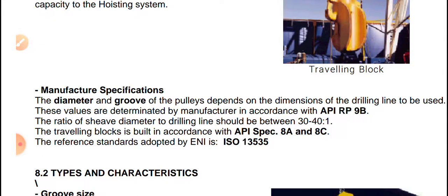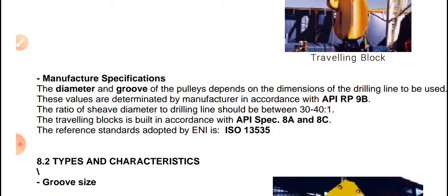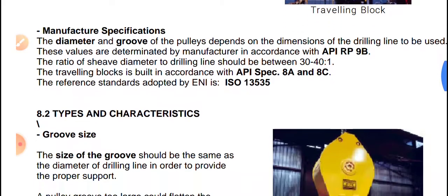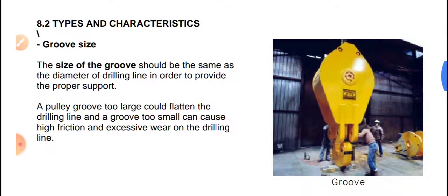The diameter and the grooves of the pulleys depend on the dimensions of the drill line. These values are determined by the manufacturer in accordance with API standards. The ratio of sheave diameter to drill line should be between 30 to 40 to 1. Different companies may adopt different reference standards.